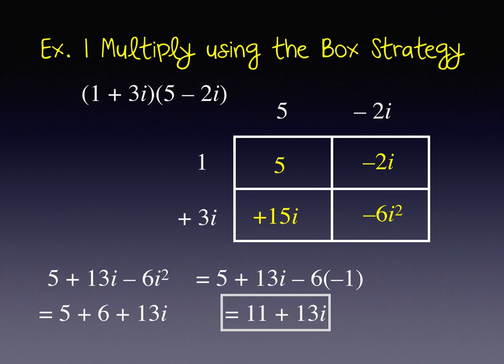So when I look at my box and try to make sense of my product in comparison to the structure of the box, along this diagonal I actually have the real part of the complex number, because negative 6i squared is positive 6. 6 plus 5 is 11. Along the other diagonal I have the imaginary part. So that's where my 11 plus 13i comes from.